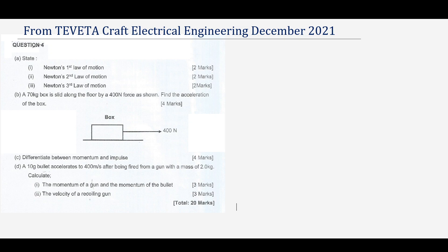We have the mass which is 70 kg, and we also have the force which is 400 newtons. We know that force is equal to mass times acceleration, and what we've been asked to find is the acceleration, so we make acceleration the subject of the formula.